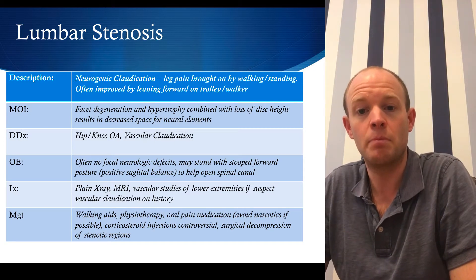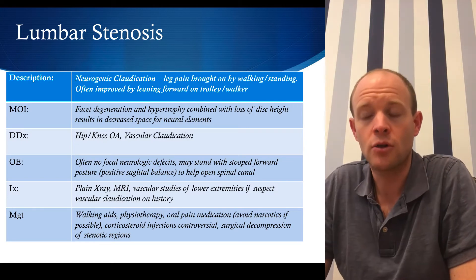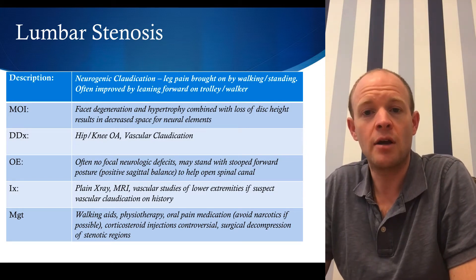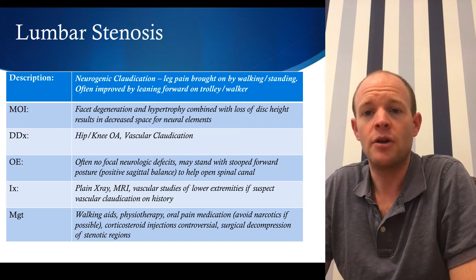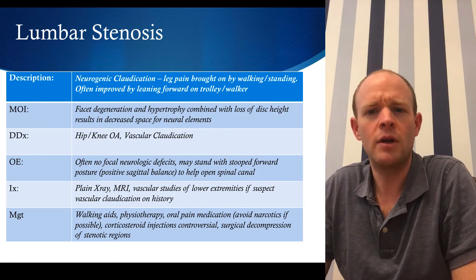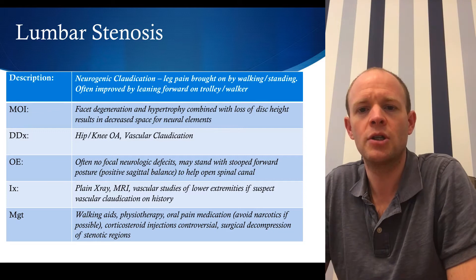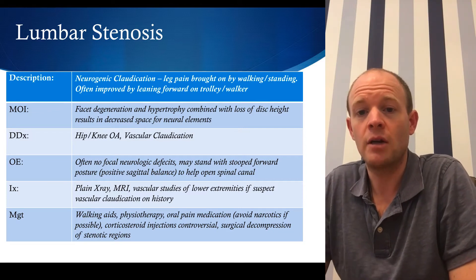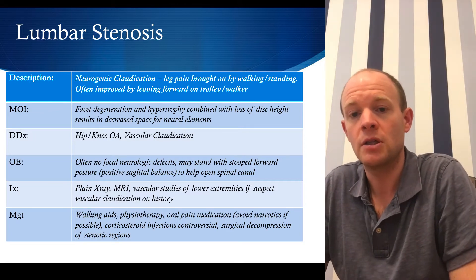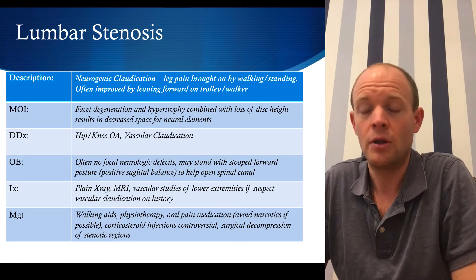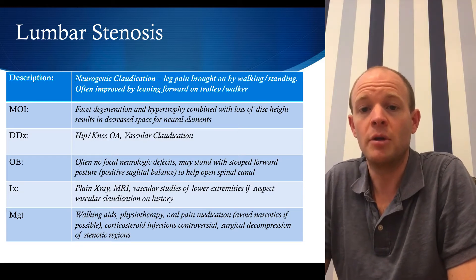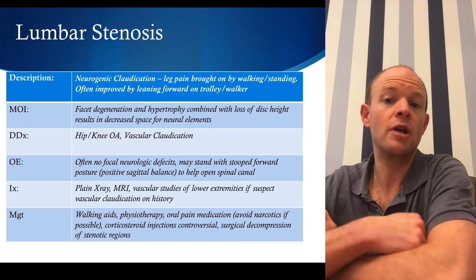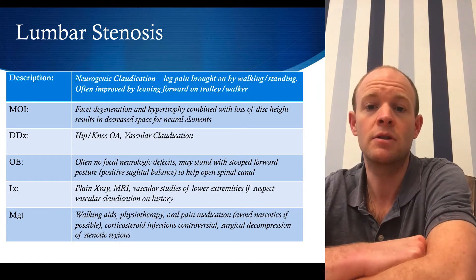With neurogenic claudication, leaning forward makes it feel much better and patients can usually walk a little bit longer. The vascular claudication patient will sit down on a park bench knowing they can walk for ten minutes, get to bench one, sit for ten minutes, then make it to bench two. The neurogenic claudication tends not to be quite as time-specific. In many elderly patients there will be components of both, as chronic smokers or diabetics are at risk for vascular claudication and may also have a component of neurogenic claudication, which makes the history and physical exam very tricky.